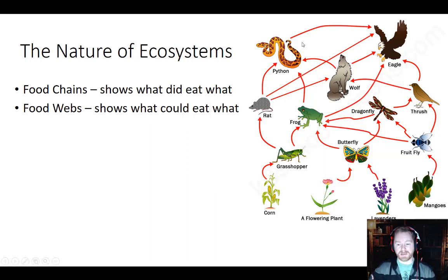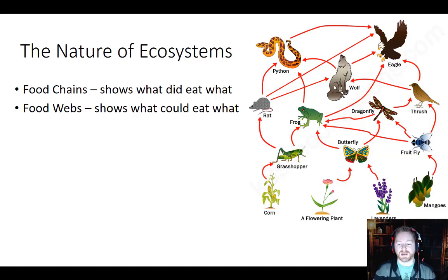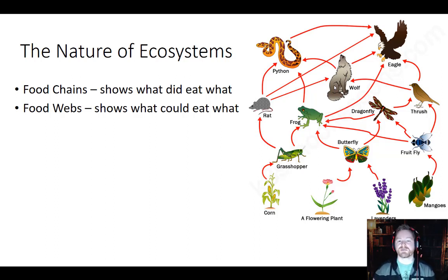Here's a menu — this is the food web showing what could eat what. What could eat the butterfly? According to this, it could be eaten by the frog or by the dragonfly. What could the wolf eat? He could eat the rat or he could eat the thrush. There are lots of different things here that could be eaten, but we're not saying what did eat what — we're saying what could eat what. That's our food web.